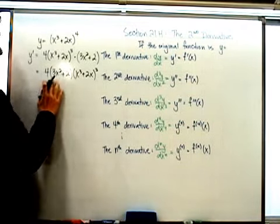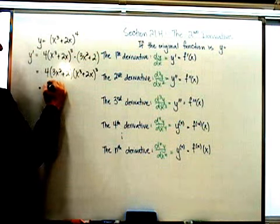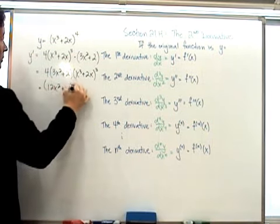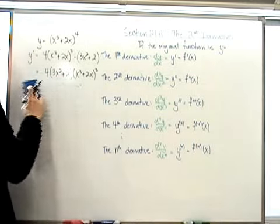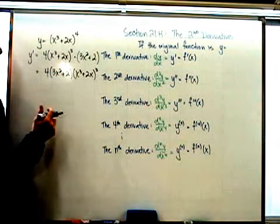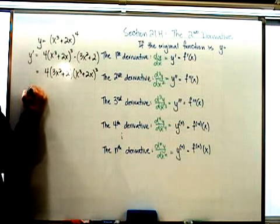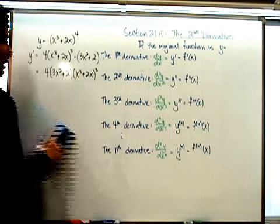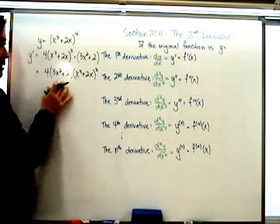If I wanted to, I could distribute this as well, and that would be 12x squared plus 8. But let's leave it at this — that's the first derivative. Now let's find the second derivative. To do so, notice that I actually have to use the product rule because this is a product.